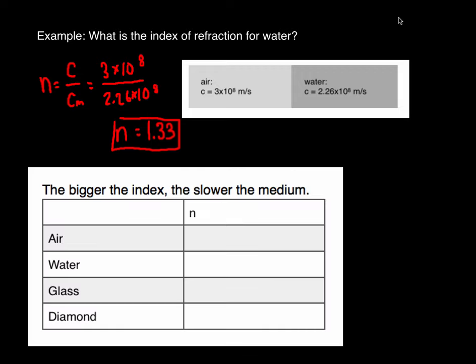The bigger the index of refraction, the slower the medium. The index of refraction for air is 1; for water, it's 1.33; for glass, it's 1.52; and for diamond, it's 2.42. Faster mediums are ones that have an index of refraction closer to 1. Slower mediums are the ones that have bigger indices of refraction.